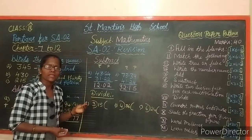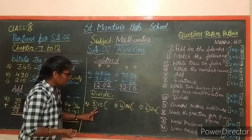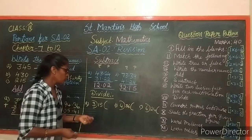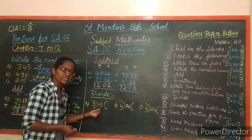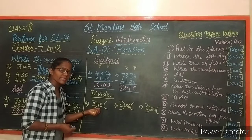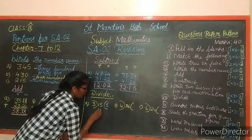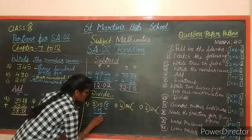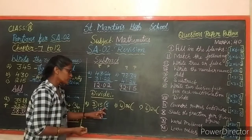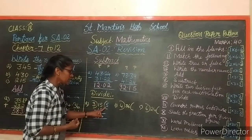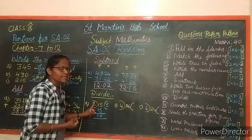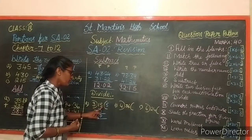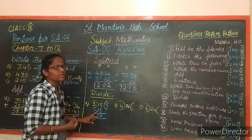Now divide - using tables you will do the division. First: 15 divided by 3. Use the 3 times table. 3 fives are 15. Write that down. Then 15 minus 15 equals 0. The quotient is 5, and the remainder is 0.